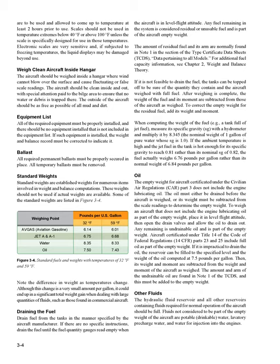Ballast: All required permanent ballast must be properly secured in place. All temporary ballast must be removed. Standard Weights: Standard weights are established weights for numerous items involved in weight and balance computations. These weights should not be used if actual weights are available. Some of the standard weights are listed in figure 3-4. Note the difference in weight as temperatures change. Although this change is a very small amount per gallon, it could result in a significant total weight change when dealing with large quantities of fluids, such as those found in commercial aircraft.